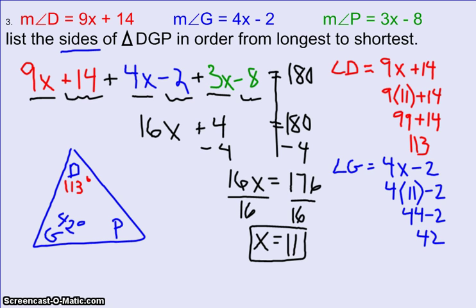All right, then lastly, angle P was 3x minus 8. So you'll have 3 times 11 minus 8. Well, 3 times 11 is 33. 33 minus 8 is 25. So angle P is 25 degrees.